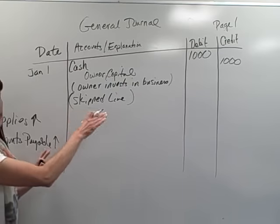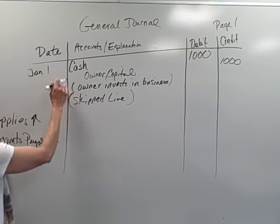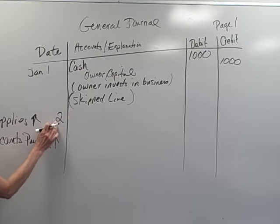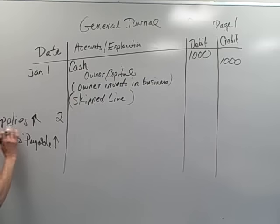Okay, you don't have to write it in. I'm just showing you skip a line. And then we move to the next one. And let's say this happened on January the 2nd. So I'm going to put my date, which is January the 2nd. My supplies is going up. Supplies is an asset. To increase an asset, you debit it.